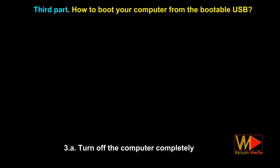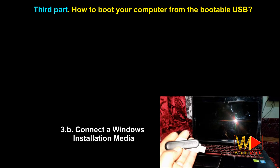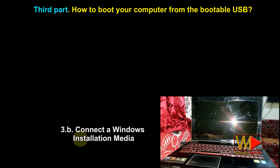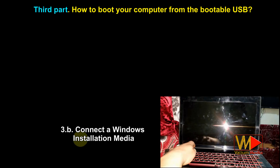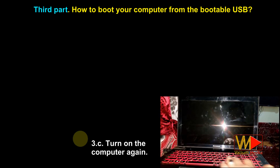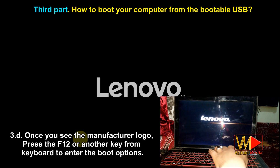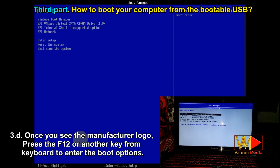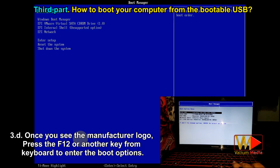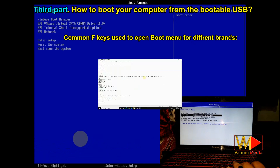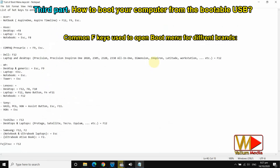Turn off the computer completely. Connect the Windows installation media, then turn on the computer. Once you see the manufacturer logo, press F12 or another key to enter the boot options. This is the list of the most common keys to enter the boot menu for different brands.